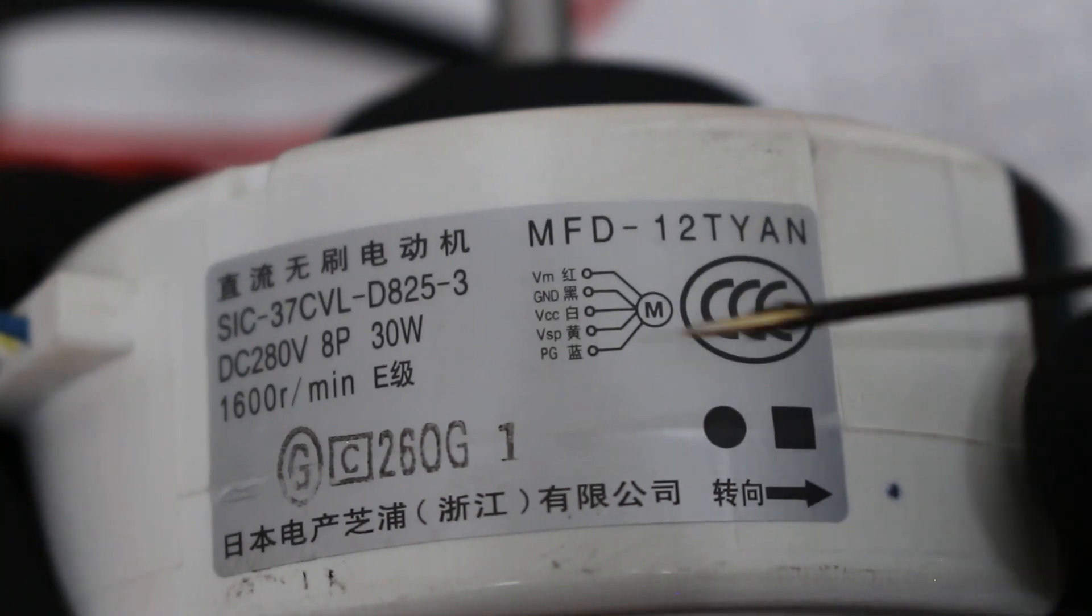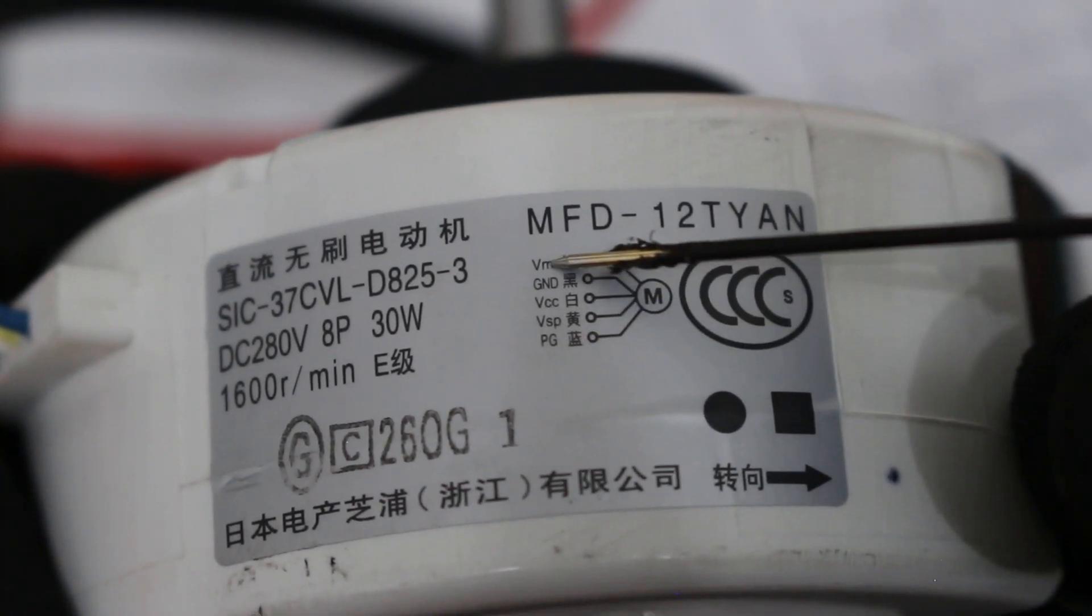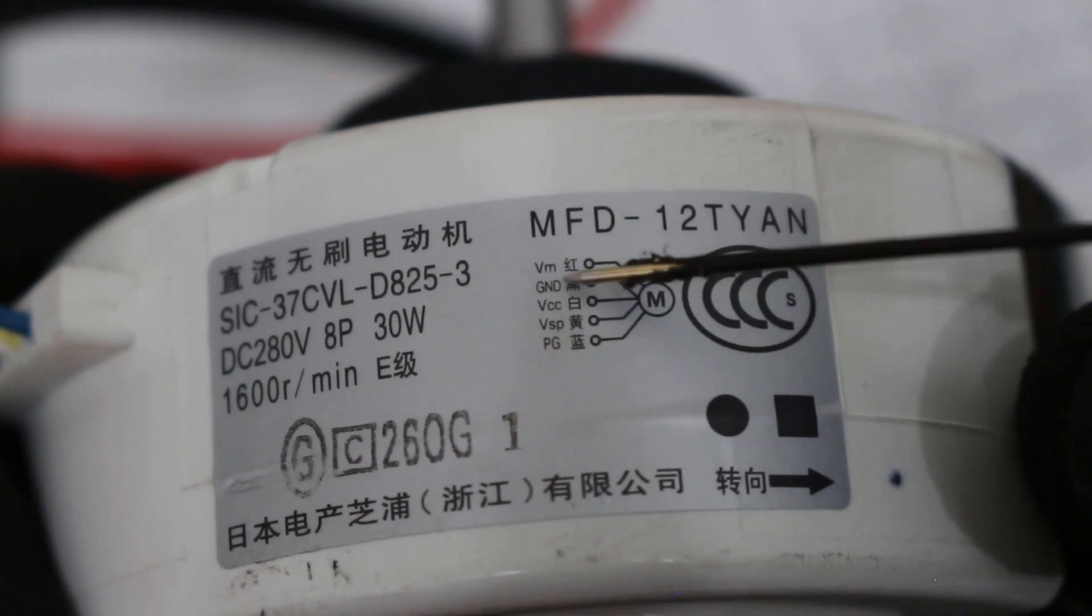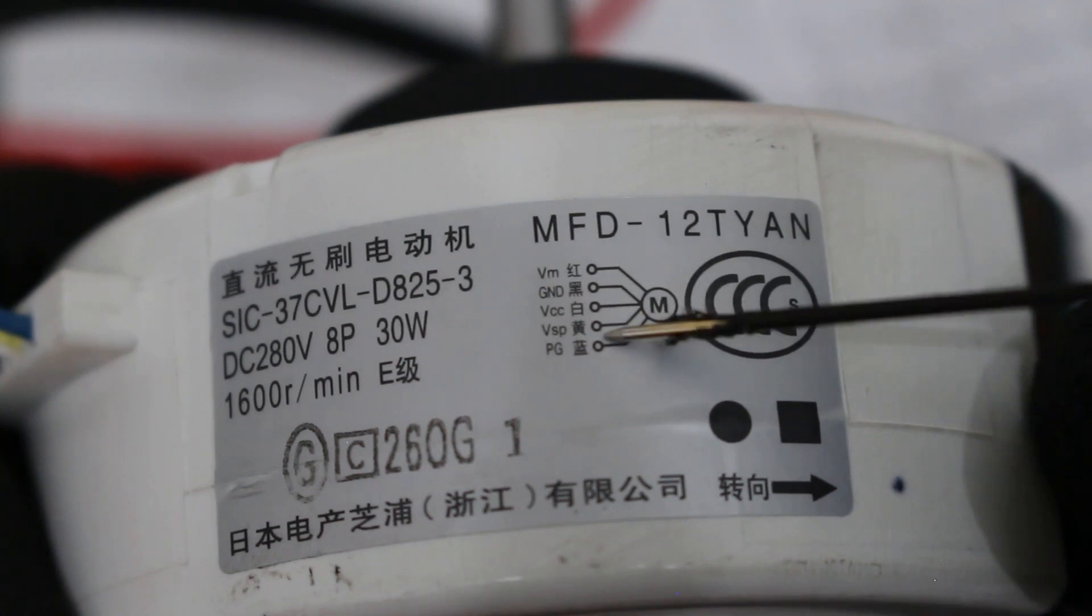If we look closely on the diagram for the motor, we have these Chinese symbols and then these abbreviations. VM, ground, VCC, VSP, and PG. Let's explain that.